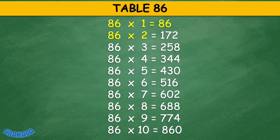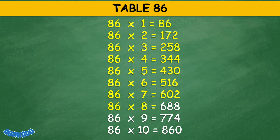Table 86: 86 times 1 equals 86, 86 times 2 equals 172, 86 times 3 equals 258, 86 times 4 equals 344, 86 times 5 equals 430, 86 times 6 equals 516, 86 times 7 equals 602, 86 times 8 equals 688, 86 times 9 equals 774, 86 times 10 equals 860.